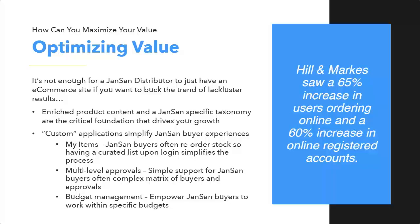Optimizing the value: enriched product content does way more than just present itself well on site. People are familiar with search engine optimization — you go to Google or Yahoo or Bing, and the first thing you do is type in a search. Having a robust catalog can absolutely help you with that, because when search engines crawl your site, they're going to see that a distributor in Seattle carries all these different product lines and rank you way higher than somebody that doesn't have that visibility across their catalog.